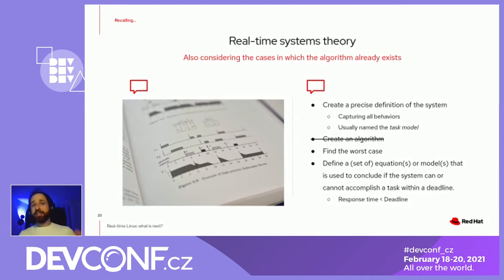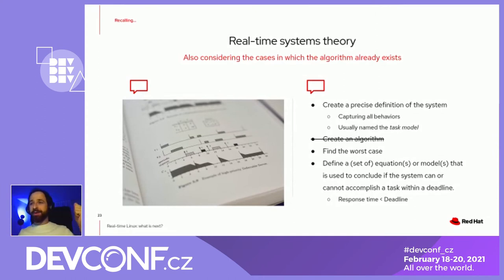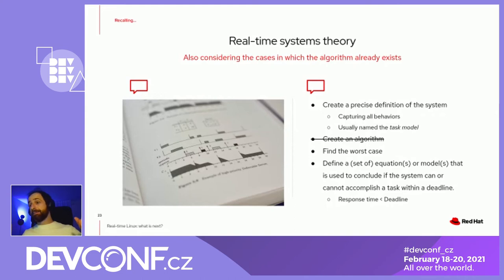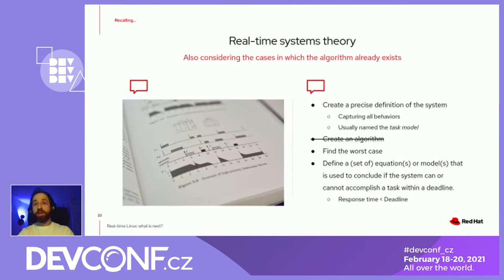For example, the scheduling latency definition: we said that the scheduling latency is the longest time between the arrival of a highest-priority job and when it starts executing its own code. Then we created a formal model that represents all the kernel events that could cause this delay or influence this metric.